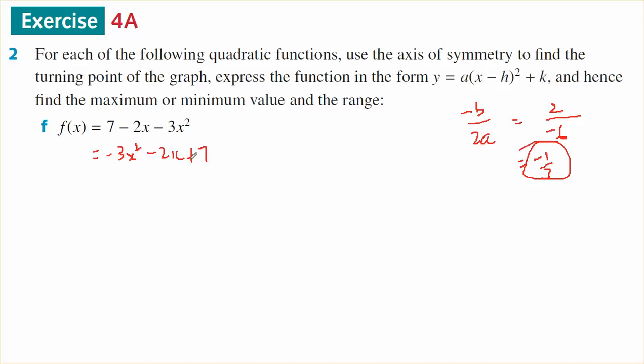I'd like to complete the square because completing the square will put it into this form. To complete the square I need to take out a common factor of -3. So that will turn to x², that will turn to +2/3x, and that will turn to -7/3.